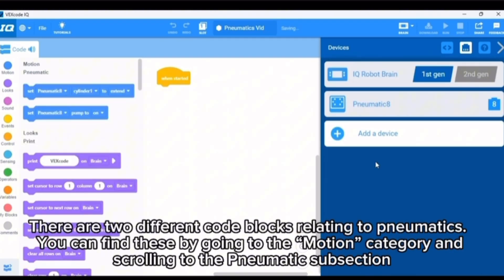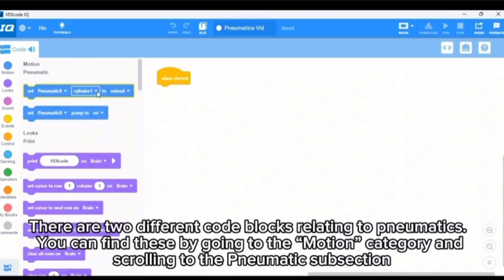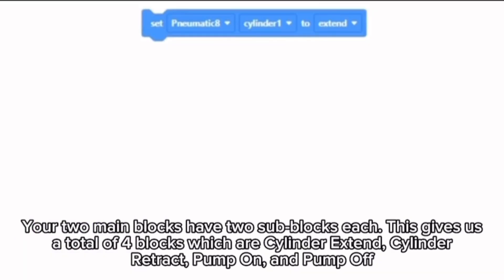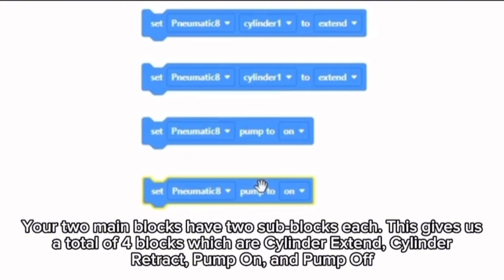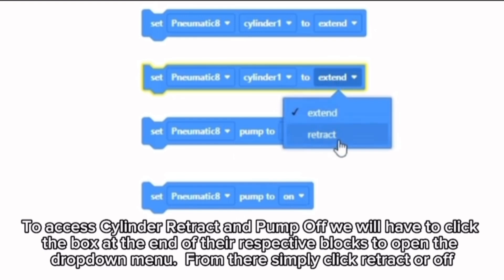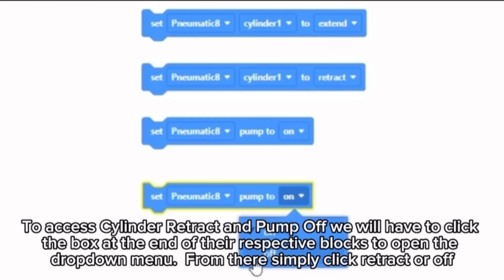There are two different code blocks relating to pneumatics. You can find these by going to the motion category and scrolling to the pneumatic subsection. Your two main blocks have two sub blocks each. This gives us a total of four blocks which are cylinder extend, cylinder retract, pump on, and pump off. To access cylinder retract and pump off we will have to click the box at the end of the respective blocks to open the drop down menu. From there simply click retract or off.